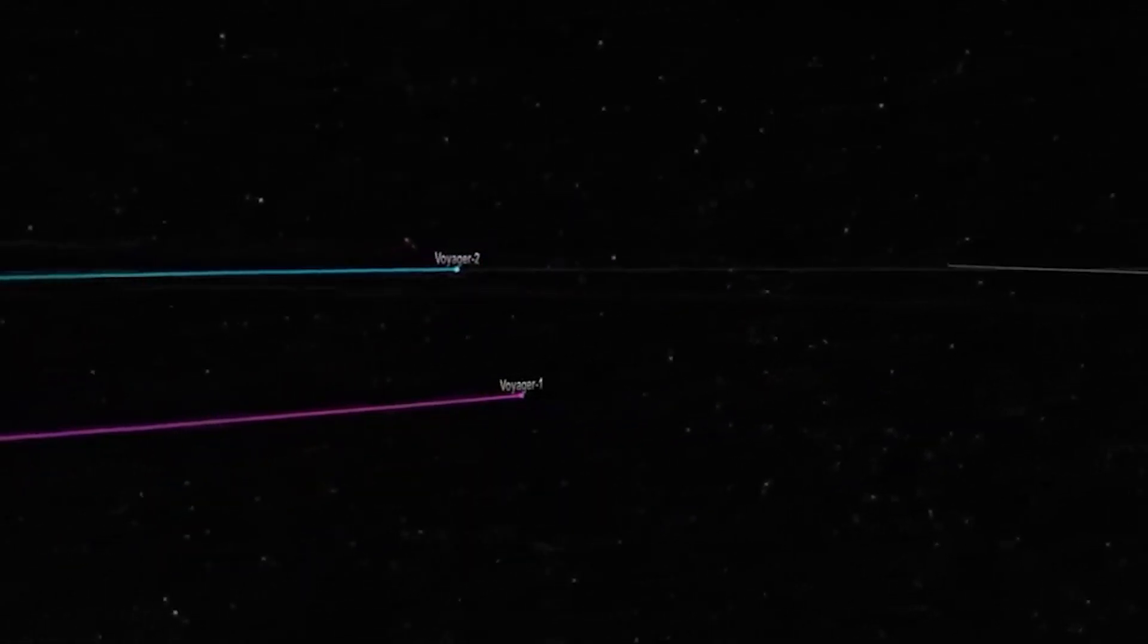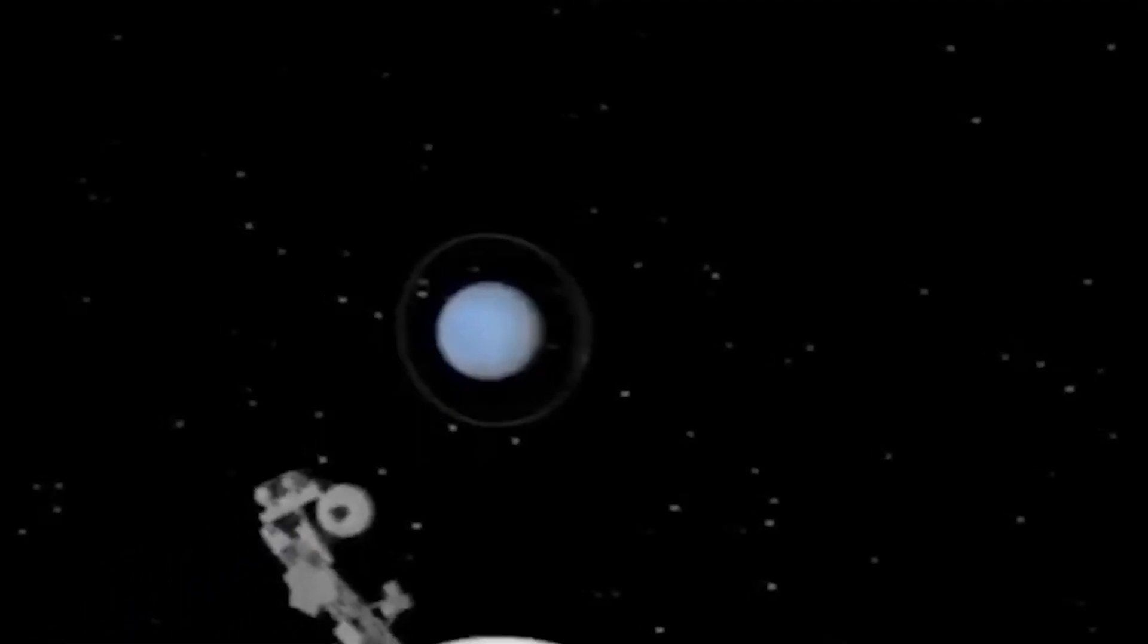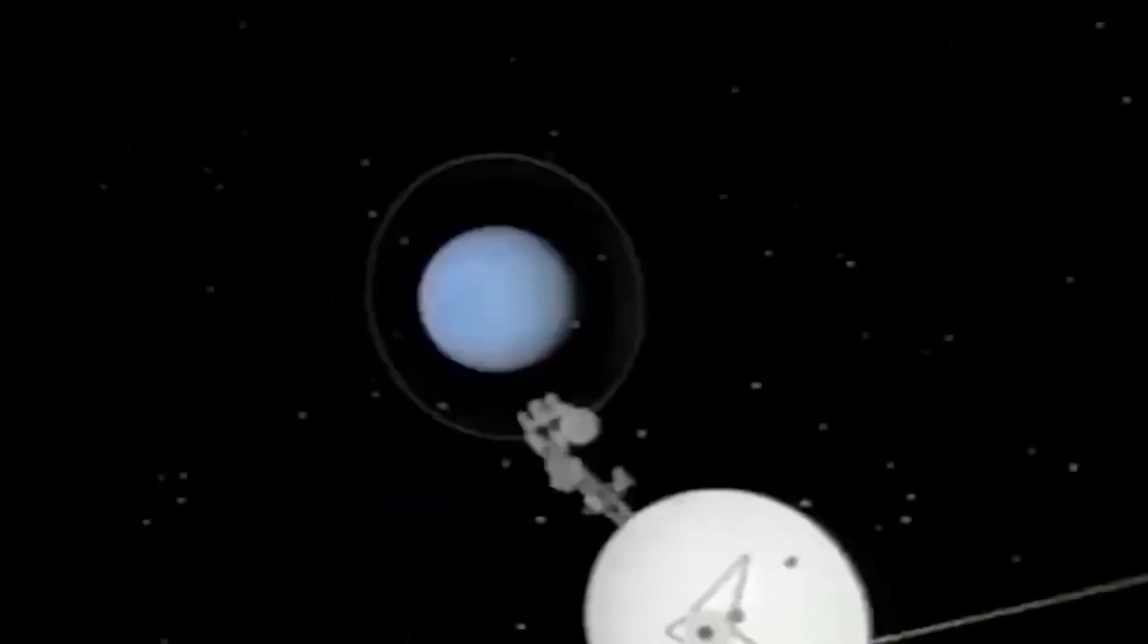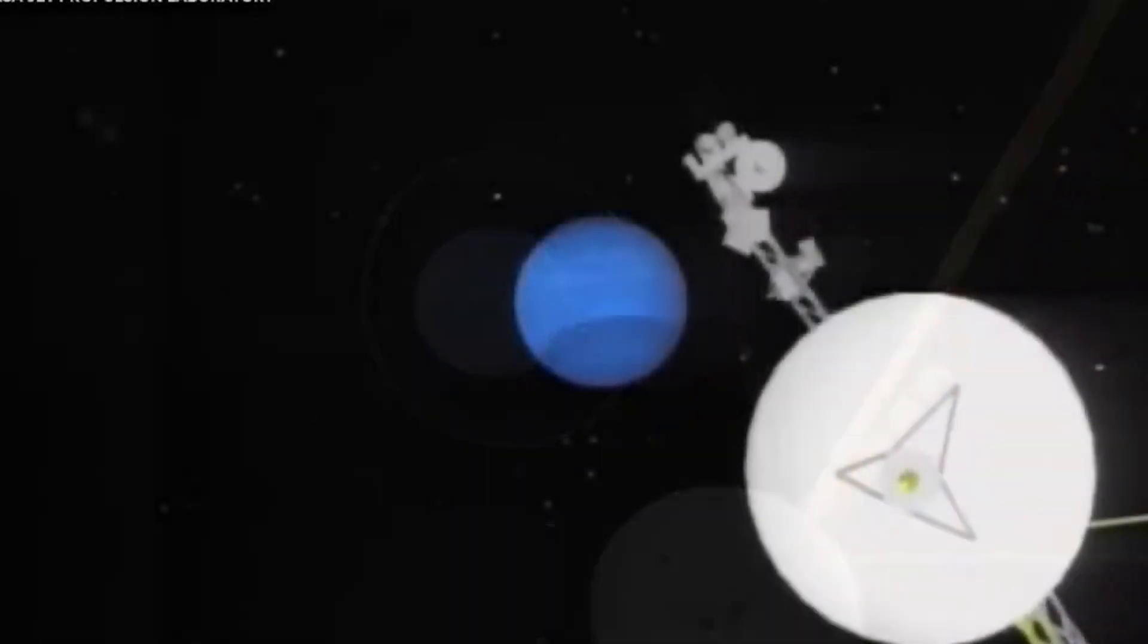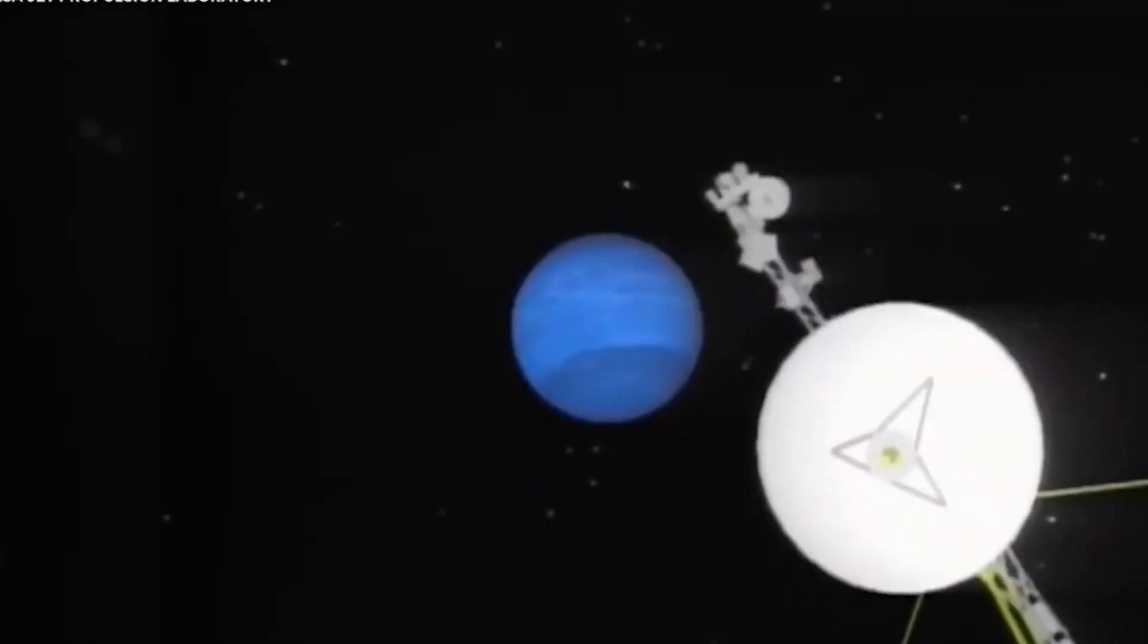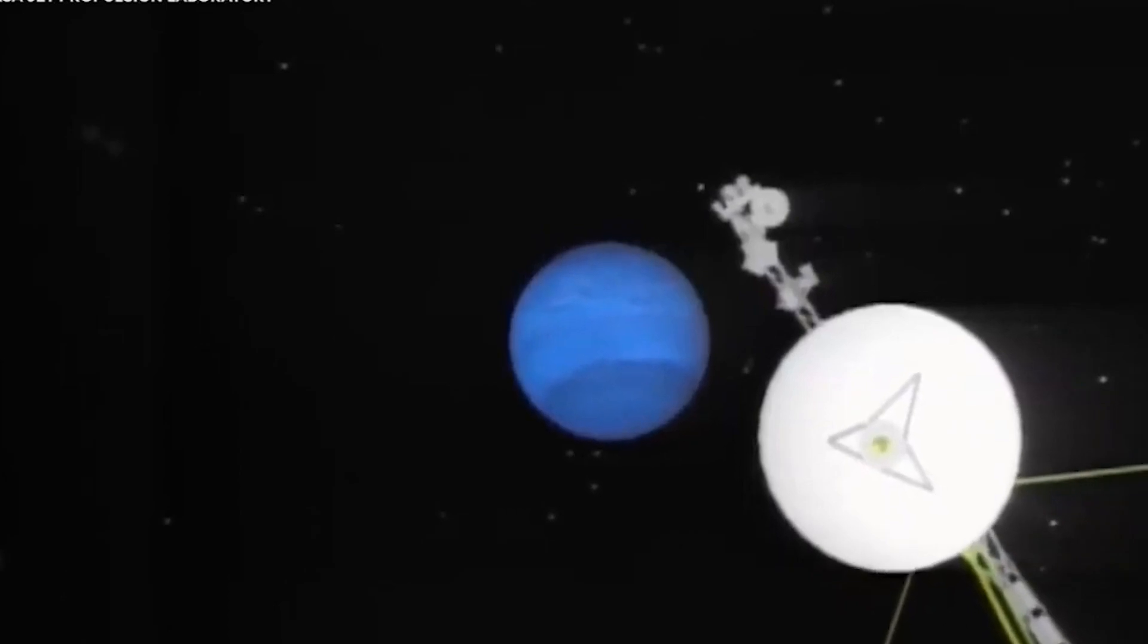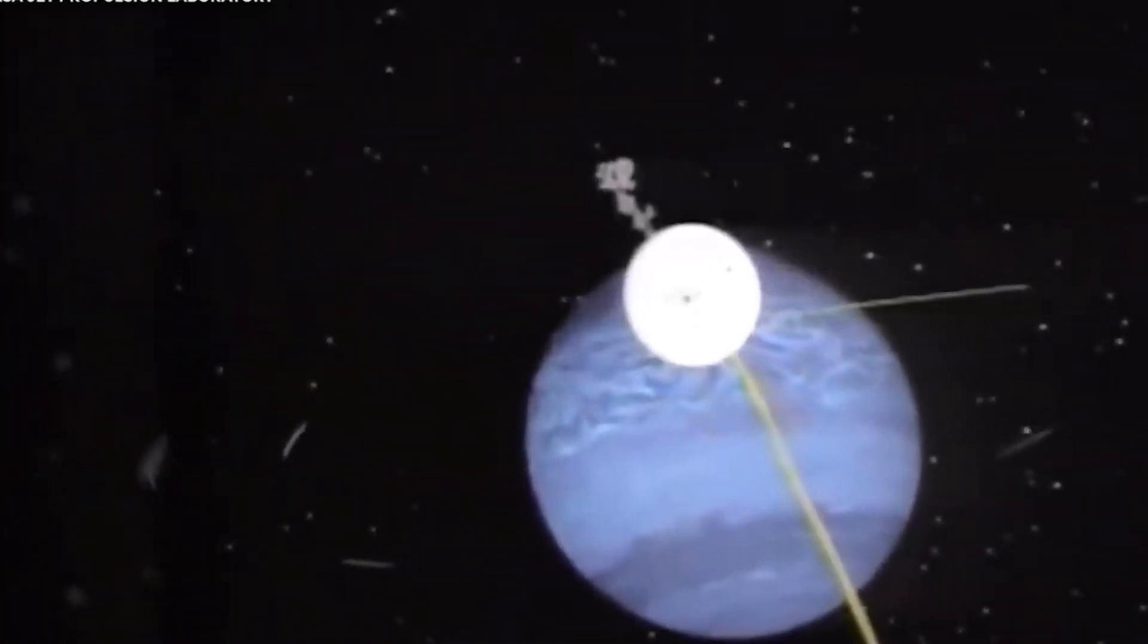On February 7th, Voyager 1 will be 10.4 billion kilometers, 6.5 billion miles from Earth, and is departing the solar system at a speed of 17.4 kilometers per second, 39,000 miles per hour. At the same time, Voyager 2 will be 8.1 billion kilometers, 5.1 billion miles from Earth, and is departing the solar system at a speed of 15.9 kilometers per second, or 35,000 miles per hour.